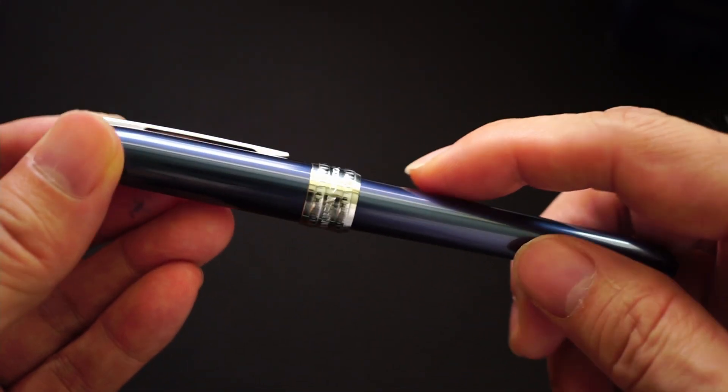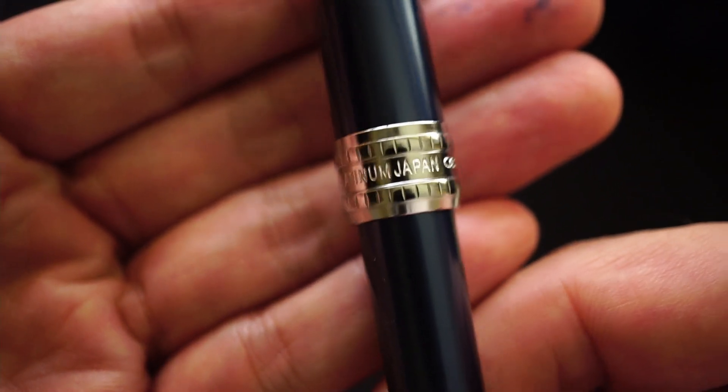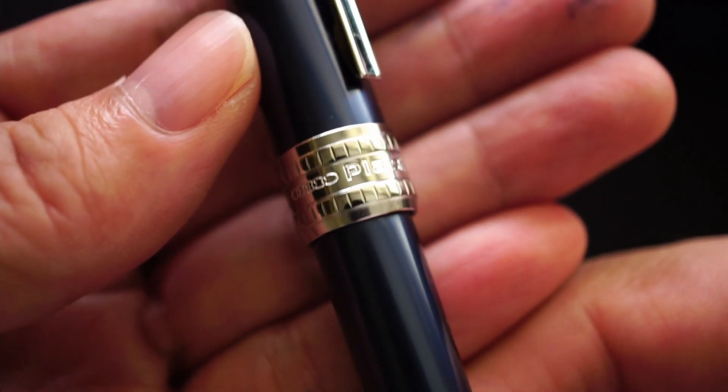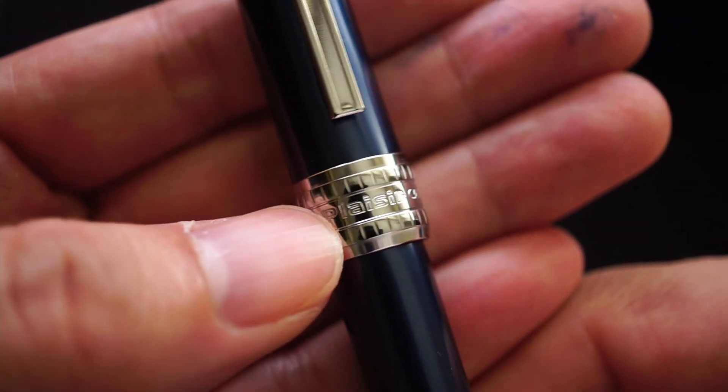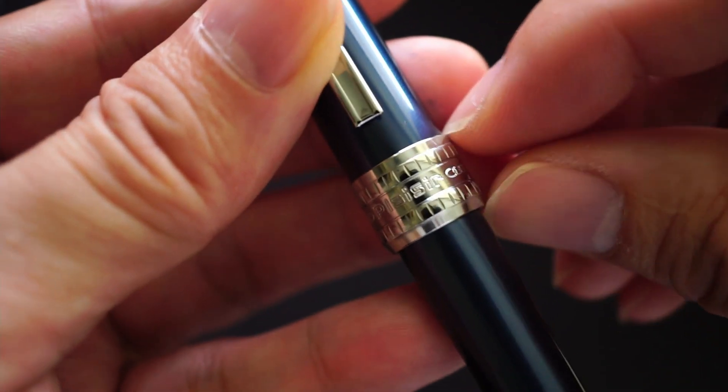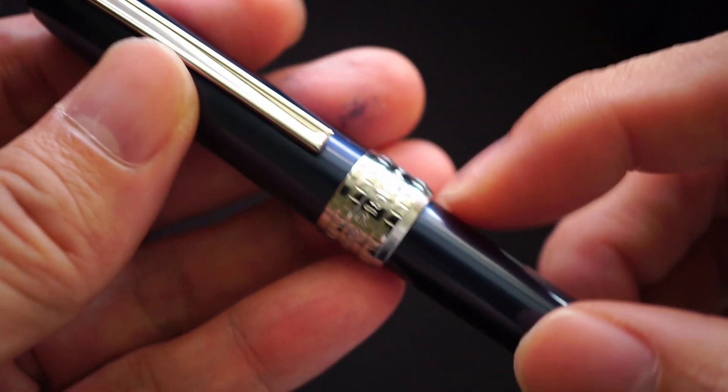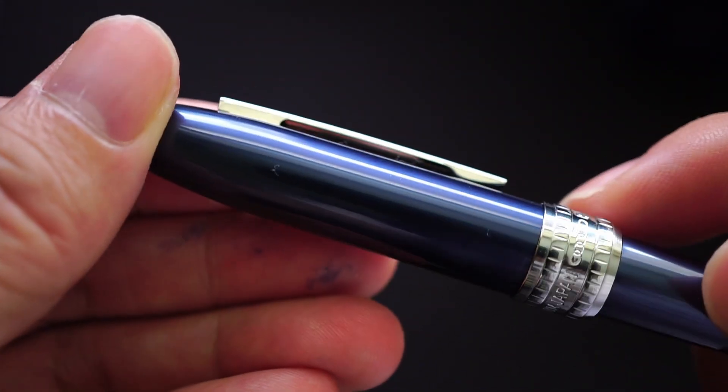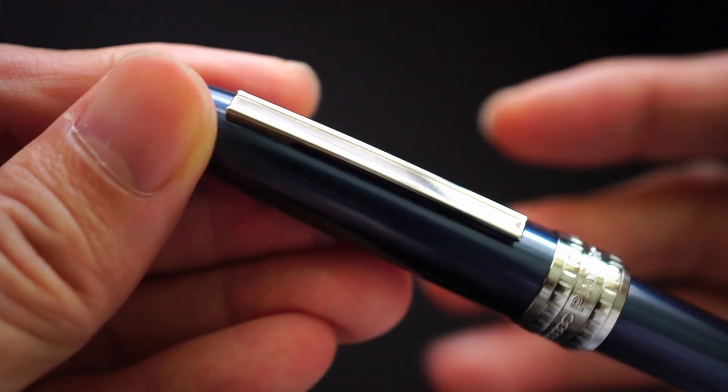The thing that jumps out to you design-wise is this very thick center band that says Platinum Japan. It has these chain links and it says Placer. I personally feel that this is a little bit too broad for my taste, but your taste could be different. The clip on the cap is very plain, it's so plain it could be a clip from a very common ballpoint pen.